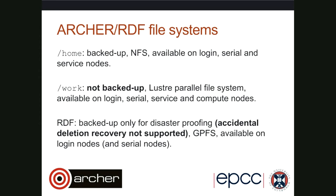The RDF file systems are backed up only for disaster recovery (DR). That means if you accidentally delete a file there, we don't have the facility to restore it. But if the whole file system gets taken out by some catastrophic event, we can restore all the data from the last snapshot. So the data is secure, but it doesn't help with accidental deletion. It's also a parallel file system — a different technology previously called GPFS, now renamed Spectrum Scale — available on Archer login nodes and serial post-processing nodes, but not on the service nodes or compute nodes.